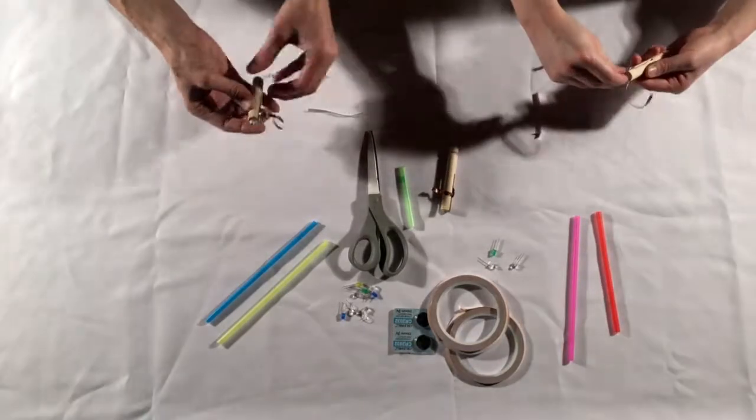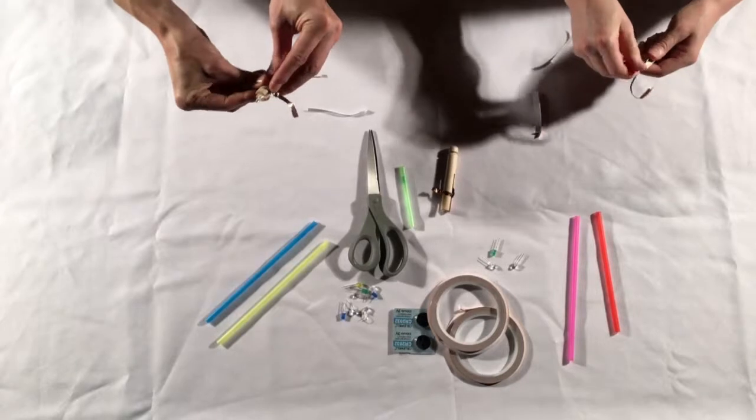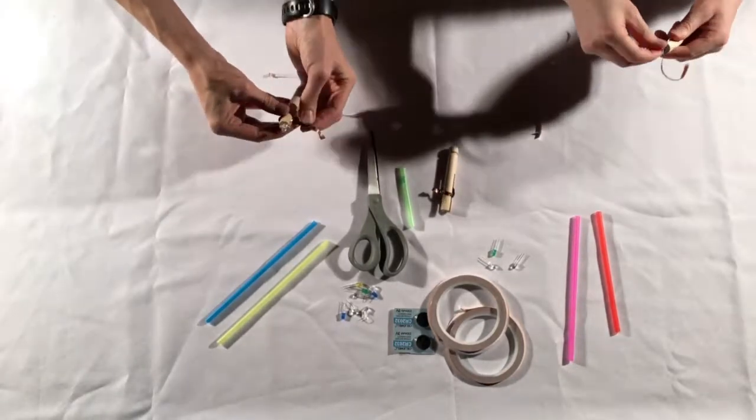To make the switch for your lightsaber, you're going to go ahead and wrap that copper tape around and stick it to the clothespin.